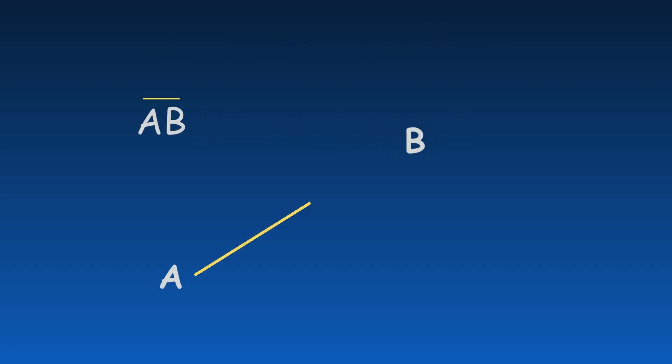A bar over two points represents a line segment between them. An arrow over two points denotes a ray, starting at the first point and extending toward the second. An arrow in both directions represents an infinite line passing through both points.